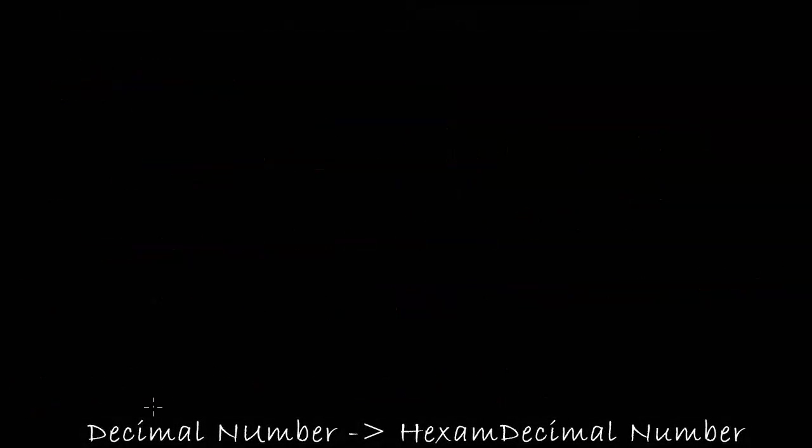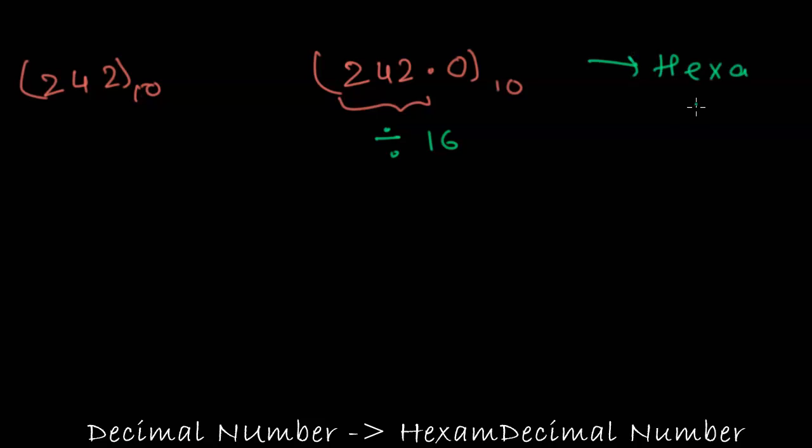Now let's see how to convert a decimal number into a hexadecimal number. Let's take the number 242 in its decimal form. So 242 is basically 242.0 because we don't have any decimal number presented here. So the numbers before the decimal need to undergo a division by 16 because we are converting into a hexadecimal number which has a base of 16. We will divide by 16 and the numbers after the decimal point have to be multiplied by 16.